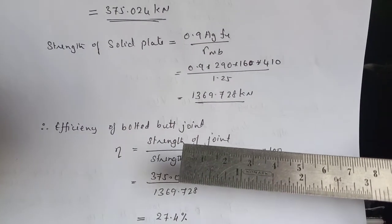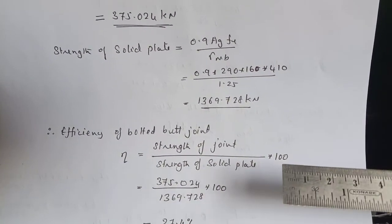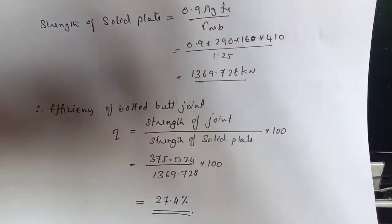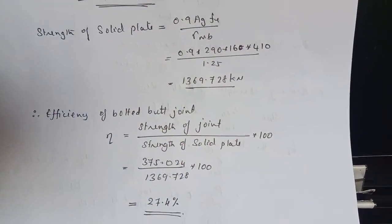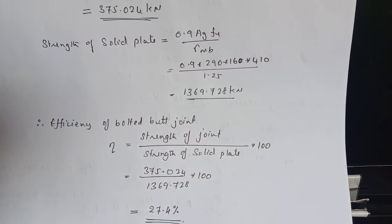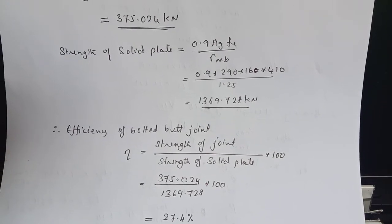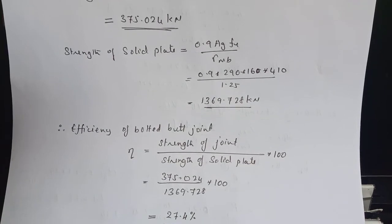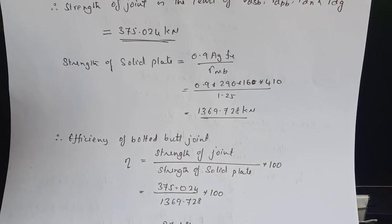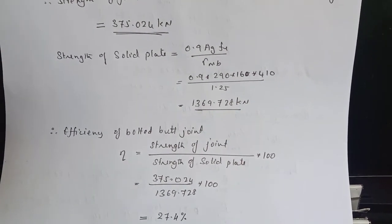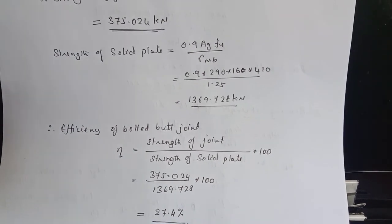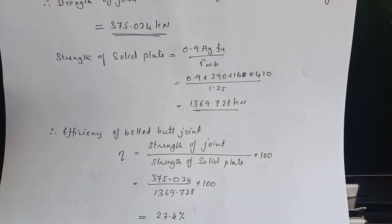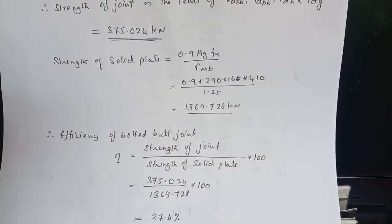Finally, the efficiency is equal to strength of joint by strength of solid plate into 100. So upon substitution, it gives us 27.4 percentage as the efficiency of the butt joint, bolted butt joint. So finally, we have learned by solving these two problem that how we can find out the efficiency and also how we can find out the strength of the butt joint. In the next video lecture, let us take a few more problems under butt joint and in coming lectures, we will also see how to design a HSFG bolt. Thank you.